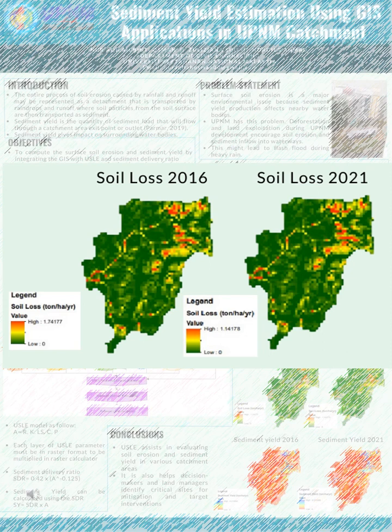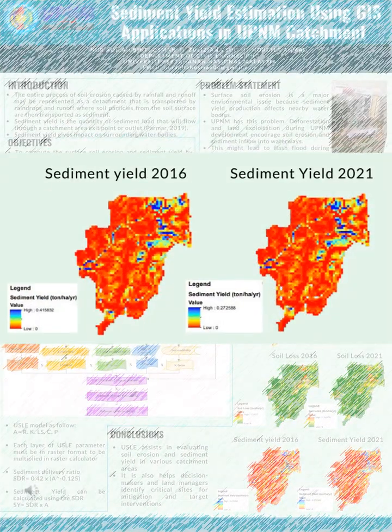In 2021, the soil loss ranged from 0 to 1.14178 tonnes per hectare per year. There is no major difference in the potential soil erosion area — only the value of soil loss is different. The decrease in soil loss can be concluded to be due to lower rainfall erosivity in 2021 compared to 2016. The soil loss value is then multiplied by the sediment delivery ratio for the UPNM catchment to calculate sediment yield.